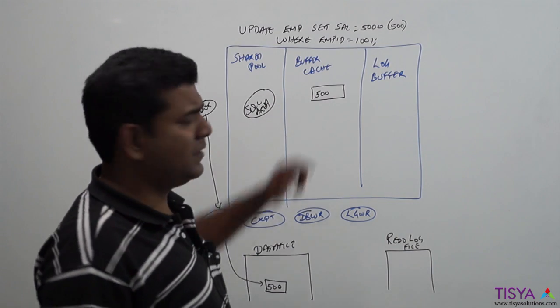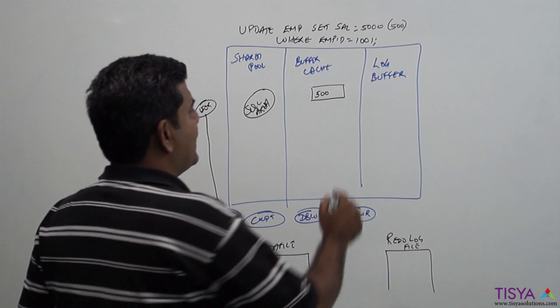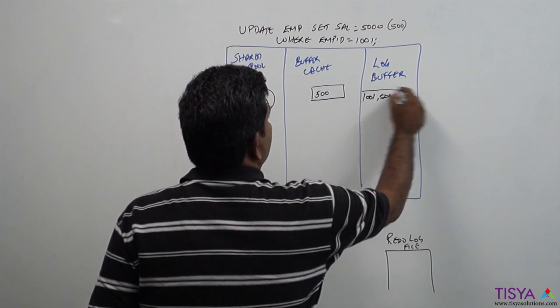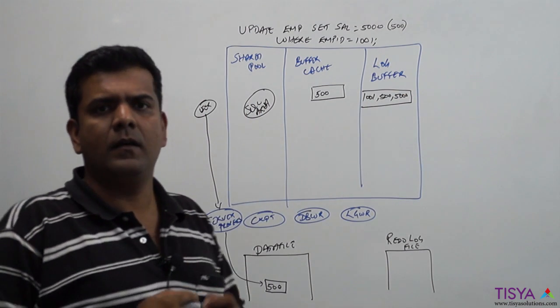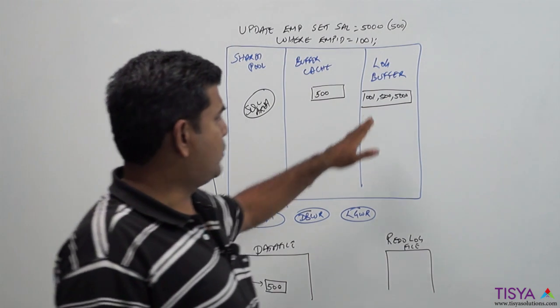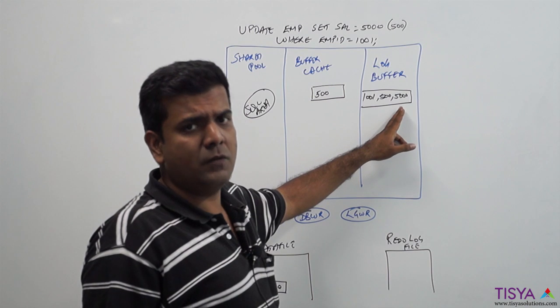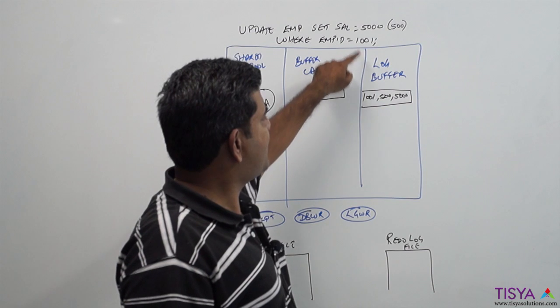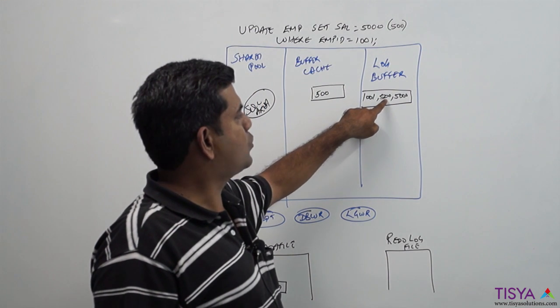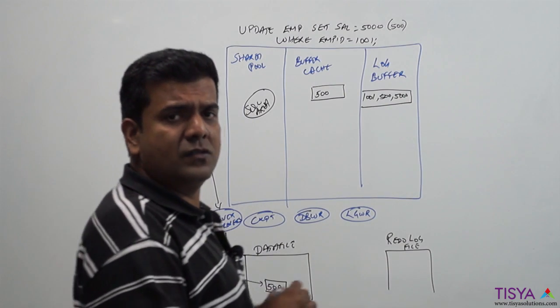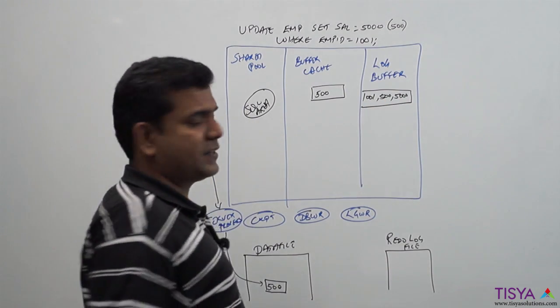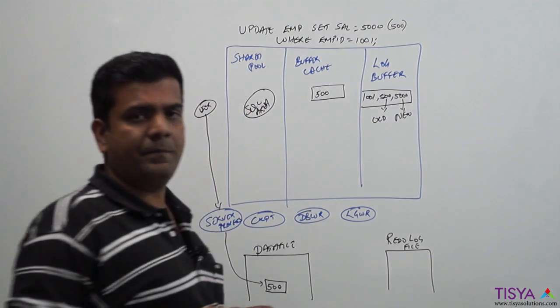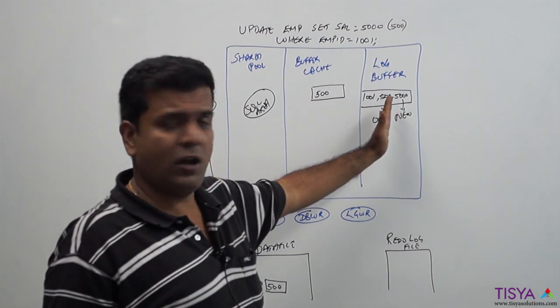Now before this update happens, something of this sort is entered into the redo log buffer. I have written just three numbers - it is not going to be as simple as that. It is going to specify there is a transaction started in which I am updating employee ID 1001 whose old value is 500 and the new value for salary is 5000. So first the entry goes into the log buffer.